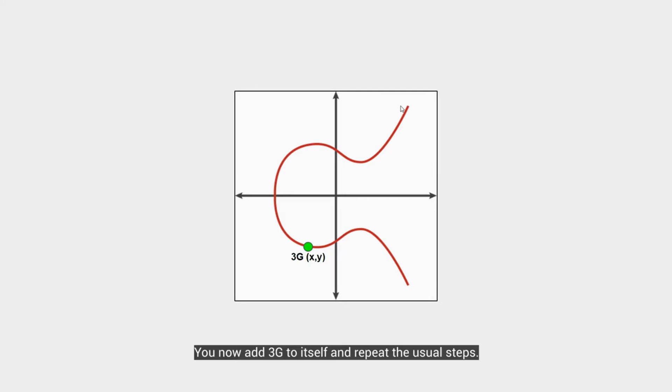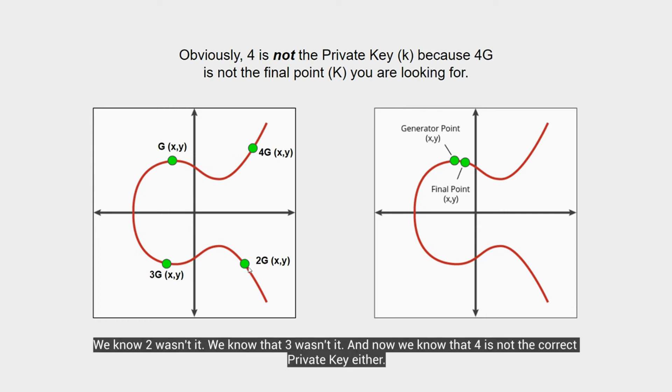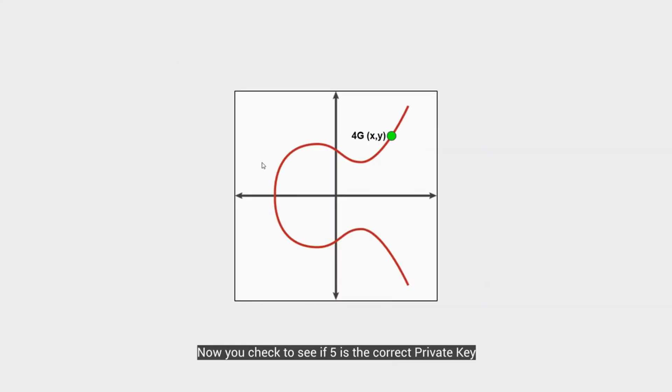So we add 3g to itself to give us the tangent line, resulting in the third point of negative 4g. Reflect that over the x-axis, which gives us the actual point of 4g. Again, we check. We know that 2g isn't it. We know that 3g is not it. Now we know that 4 is clearly not the private key that I used. So you try it again.